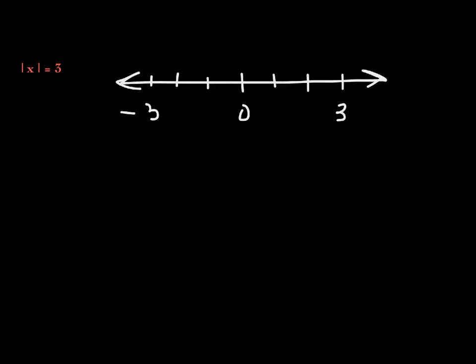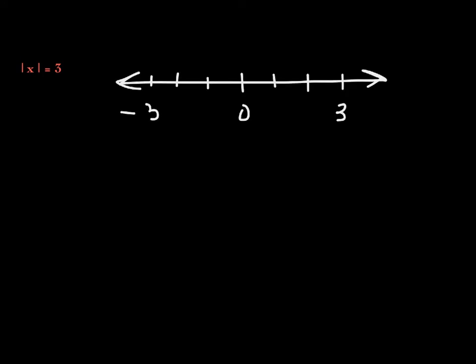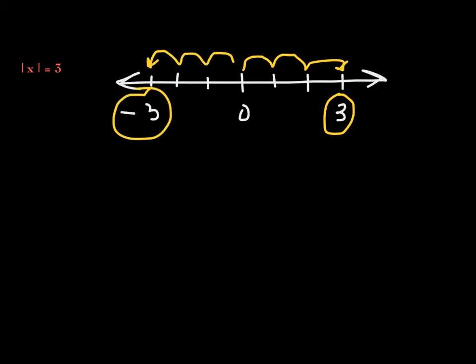Here is a picture. This is the x-axis, and I want to find all of the numbers that are 3 units away from the origin or from 0. Counting out 3 units — 1, 2, and 3 — I find that 3 has absolute value 3. Going in the other direction, negative 3 is also 3 units away from 0, so the absolute value of negative 3 is also 3.